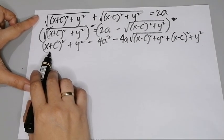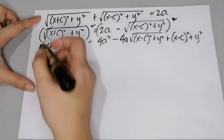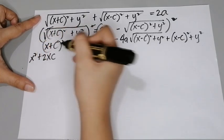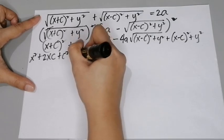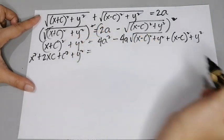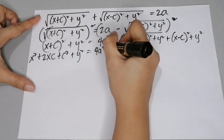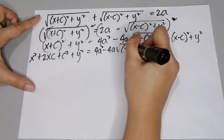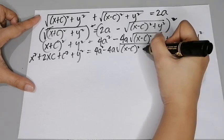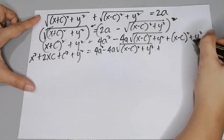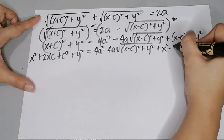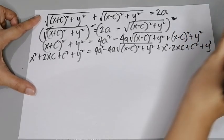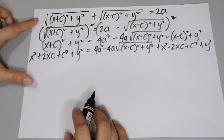Expanding, we get x² + 2cx + c² + y² equals 4a² minus 4a times the square root of (x−c)² + y², plus x² − 2cx + c² + y². Then we can simplify by canceling x², c², and y² from both sides.